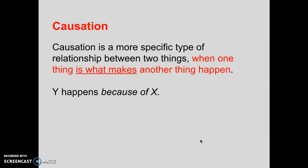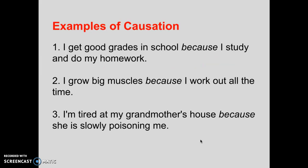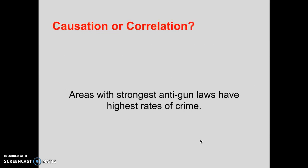Causation is a more specific type of relationship between two things — when one thing is what makes another thing happen. Y happens because of X. Examples of causation: I get good grades in school because I study and do my homework. I grow big muscles because I work out all the time. I'm tired at my grandmother's house because she is slowly poisoning me. Let's take a look at an instance and see if we can parse that as causation or correlation.